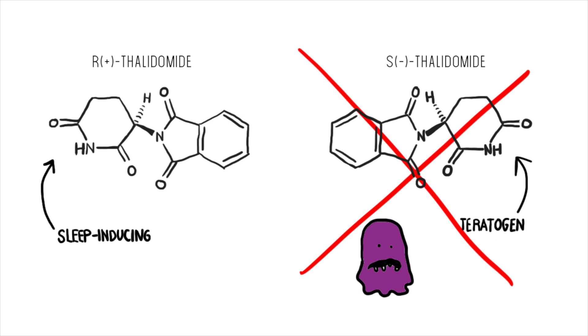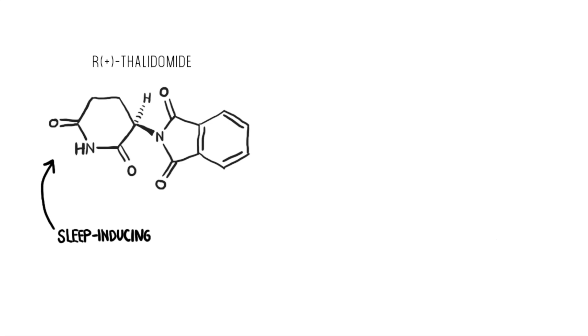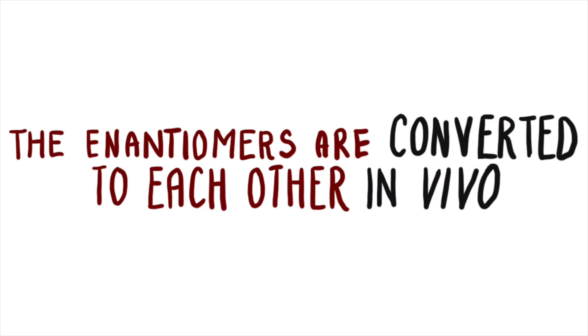Even if we were to purify the racemic mixture of thalidomide, it would be useless, because the R version metabolizes in the body and produces the S version.